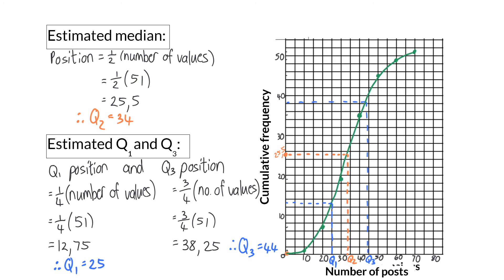From these three values we can now make certain conclusions. Q1 tells us that if you make less than 25 posts per month you are in the bottom quarter of the group of data. And Q3 of 44 tells us that if you make more than 44 posts per month you are in the top quarter of the set. In this lesson we had a look at grouped data and therefore only calculated estimated measurements. The more values in a set of data, the more accurate these estimated measurements will be.